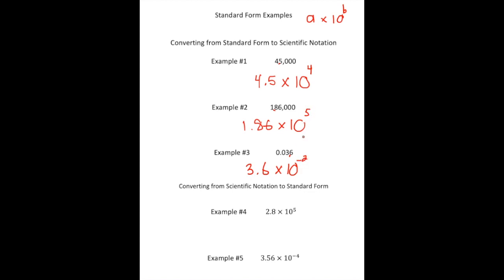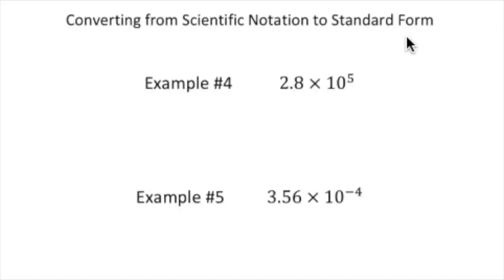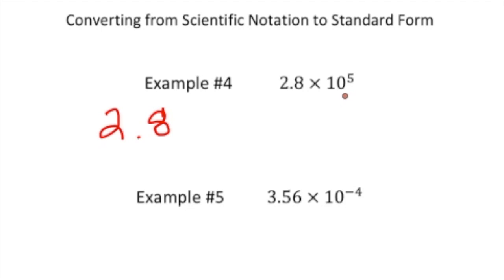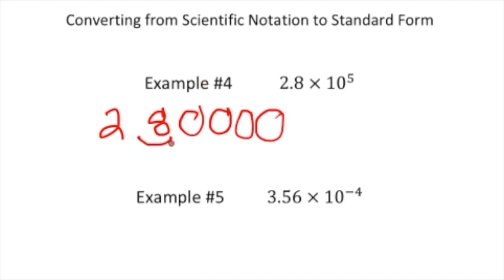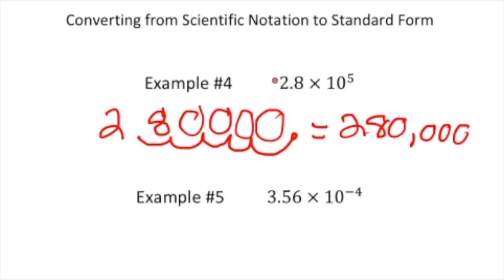Notice the first examples have positive powers and the last one has a negative power. Now we're going to take a number written in scientific notation and put it back in standard form. We have 2.8 times 10 to the fifth power. We multiply 2.8 by 10 five times, moving the decimal five spots to the right. Adding zeros gives us 280,000.